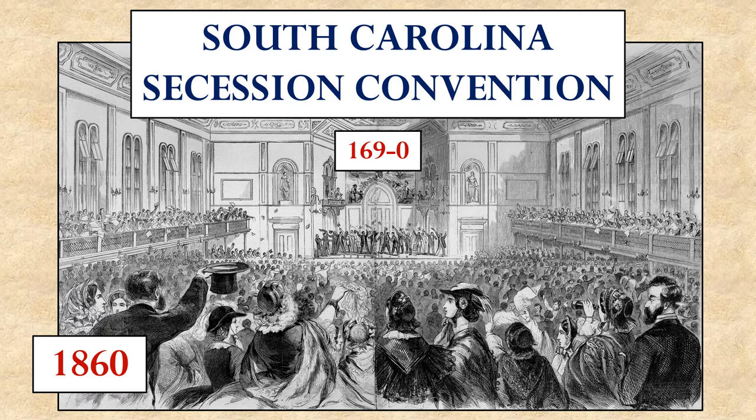Lincoln's victory was then seen as a direct threat to slavery. Southern states saw his election as an indictment from the rest of the country that the rest of the country was going to come after their slaves. So, beginning in South Carolina, the southern states began to vote to secede — to leave the Union. South Carolina held a convention to consider this possibility, and the final vote there was 169 to nothing to leave the Union.